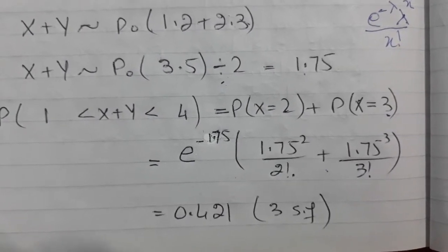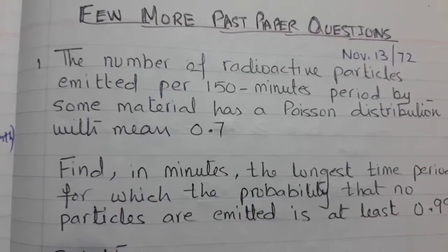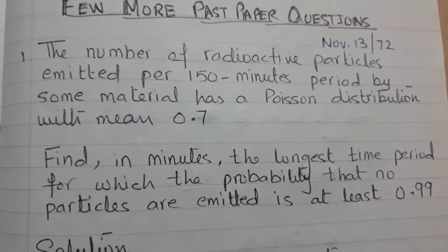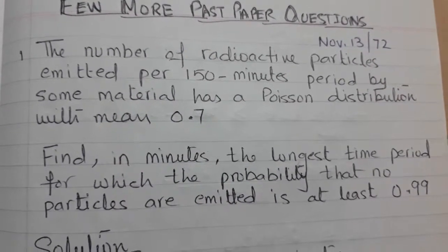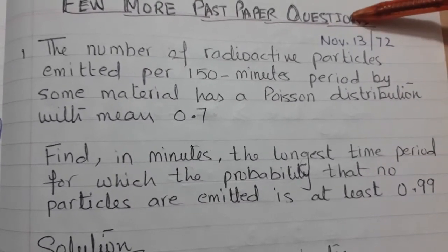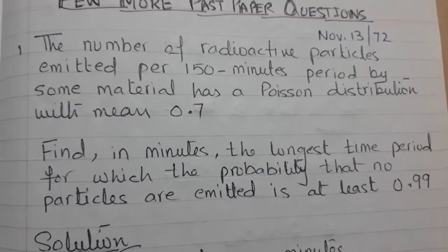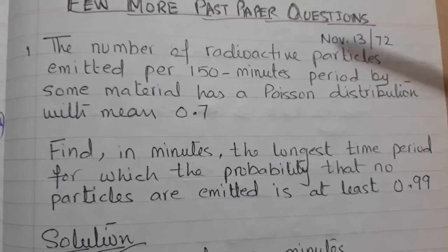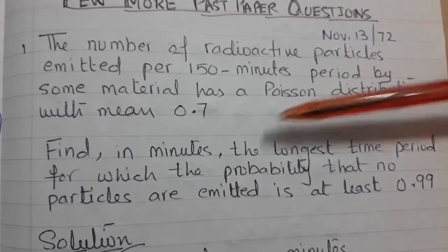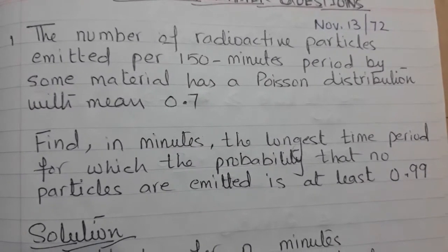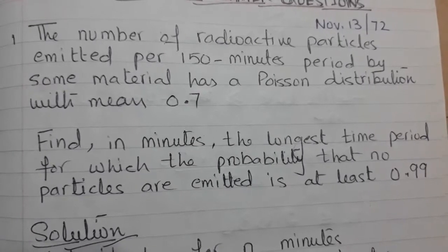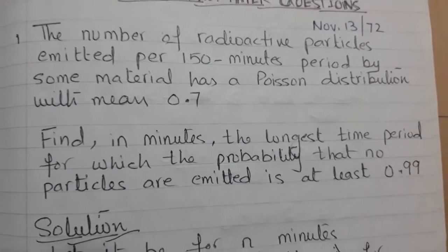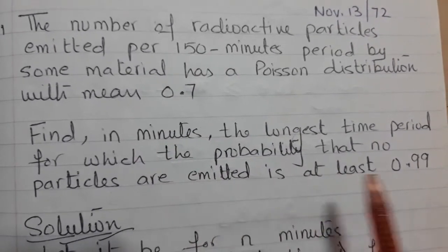Let's see two more examples from past papers which are a little more challenging. I'd encourage you to pause the video and try to solve these questions on your own first, then see the solution. This question is from November 2013, variant 7.2. It says radioactive particles are emitting on average 0.7 per 150 minutes, and you have to find out for how many minutes you can be 99% sure that no emission has happened.